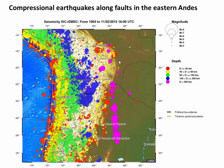This is interesting for a couple of reasons. First, thrusts along the eastern Andes, and in the sub-Andean zone in particular, produce a lot of earthquakes. They're not the biggest earthquakes, but they can be very damaging to population centers out along the eastern side of the Andes. So understanding how these fault systems work is pretty important.